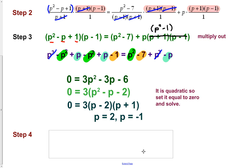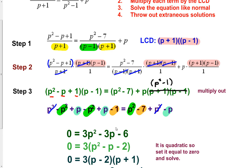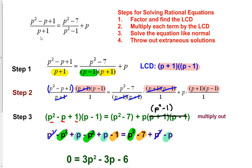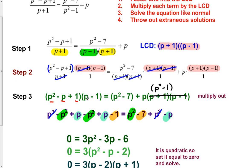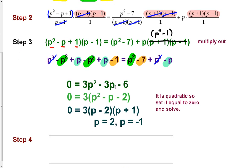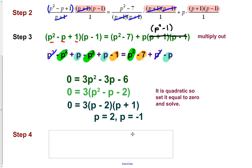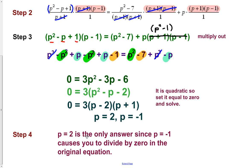Last step is making sure these solutions actually work. For p equals 2: plugging into the original equation, the denominator p plus 1 gives 3, and p squared minus 1 gives 3 — neither is 0, so that's fine. For p equals negative 1: negative 1 plus 1 equals 0 in the denominator — that doesn't work. And negative 1 squared minus 1 also gives 0. Two of the three terms would have zeros in the denominator, so we must throw out p equals negative 1 as an extraneous solution. Therefore, p equals 2 is the only answer.